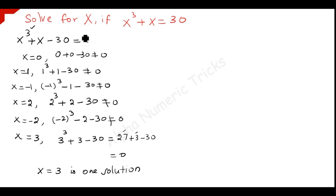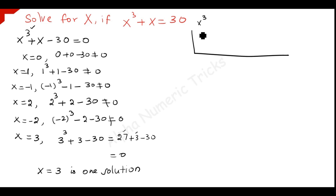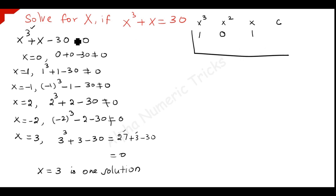Now we have to find out the remaining 2 solutions. For that, we just use synthetic division to find out the other roots. You have to write the coefficient of x cubed first, then the coefficient of x squared, the coefficient of x, and the constant term. The coefficient of x cubed is 1; x squared is not present so put 0; coefficient of x is 1; and the constant term is minus 30. We already found that x equal to 3 is one solution, so we start with 3.